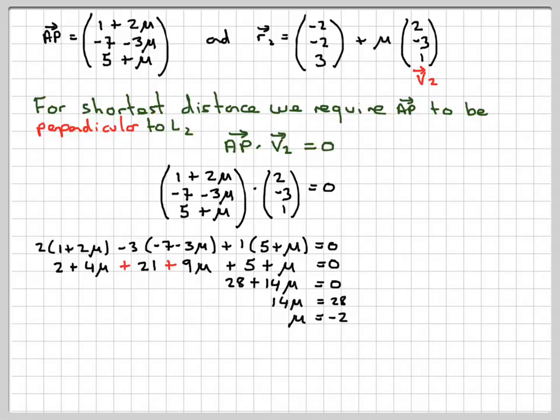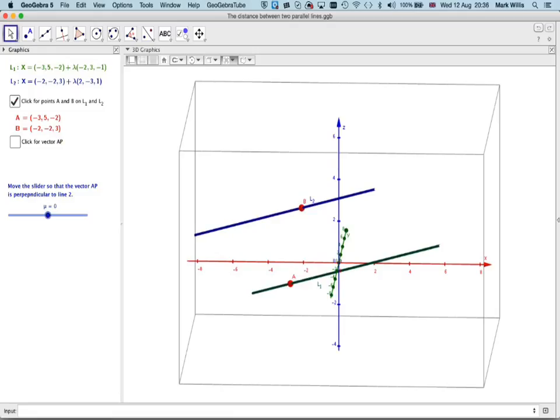Now if we go back to our GeoGebra app, if I now click here, I will actually get a vector joining AP. If I move the slider a little bit, you can see the point P there. I would need to make these two angles equal to 0. In order to do that, I need to take the directional vector of that line and the general form of this vector in terms of mu and put the scalar product of them both equal to 0.